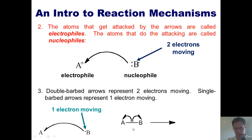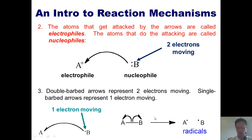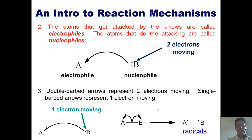A classic example: a bond between A and B where I've got a single barb going in each direction represents each of these atoms taking one of the two electrons and walking away. These species — atoms or compounds that have single electrons on them — are called radicals. When we talk about free radicals contributing to cancer, they are indeed oxygenated species that possess single unpaired electrons.